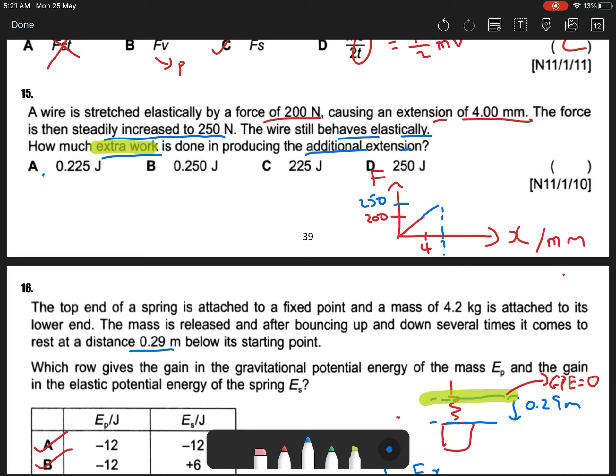When we talk about 4, we are 250, and we understand it's the same spring. Same spring means that spring constant F is equal to kx. So k is always the same, right?